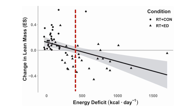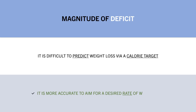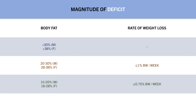Since it is difficult to calculate our precise energy expenditure, it is more accurate to aim for a desired rate of weight loss rather than a specific calorie deficit. Those with a higher body fat don't really need to worry too much about their rate of weight loss. Slightly leaner individuals might want to avoid losing weight at a rate of greater than 1% per week. At relatively healthy levels of body fat, individuals should probably cap their rate of weight loss at around 0.75% of body weight per week, and those who are extremely lean should aim to lose no more than around 0.5% of body weight per week.